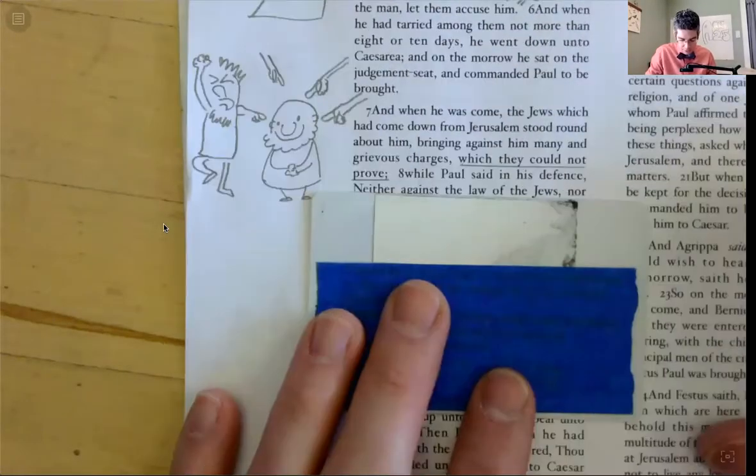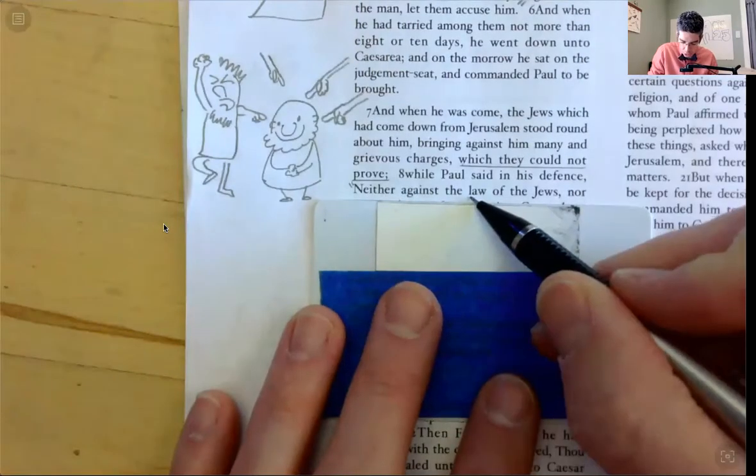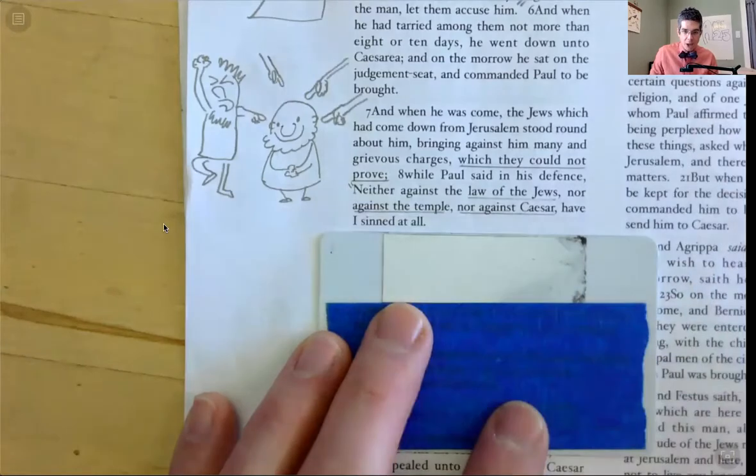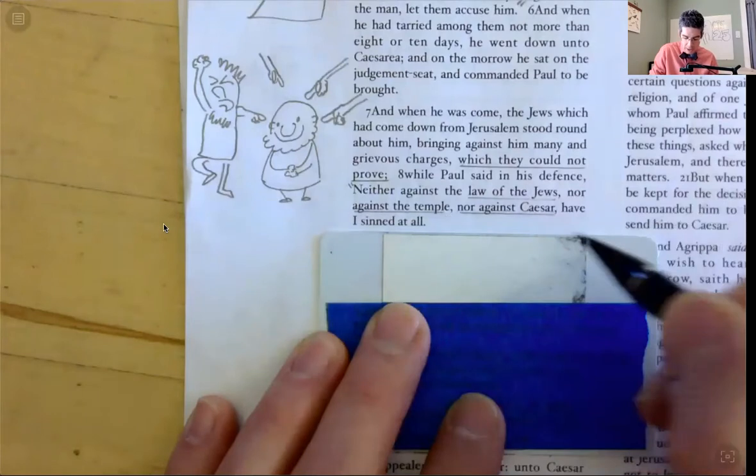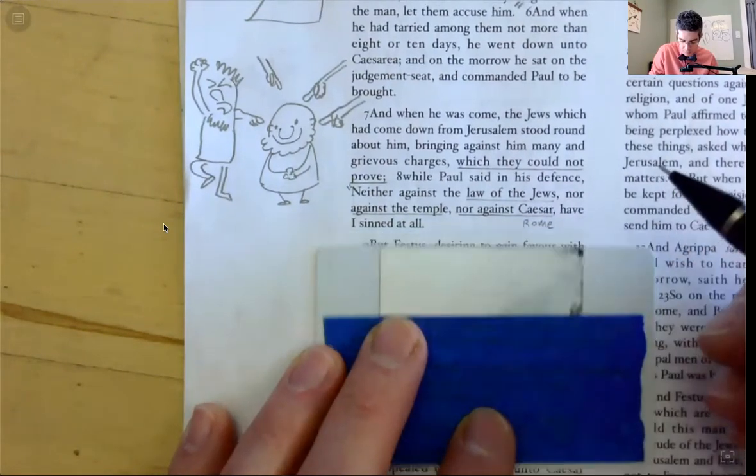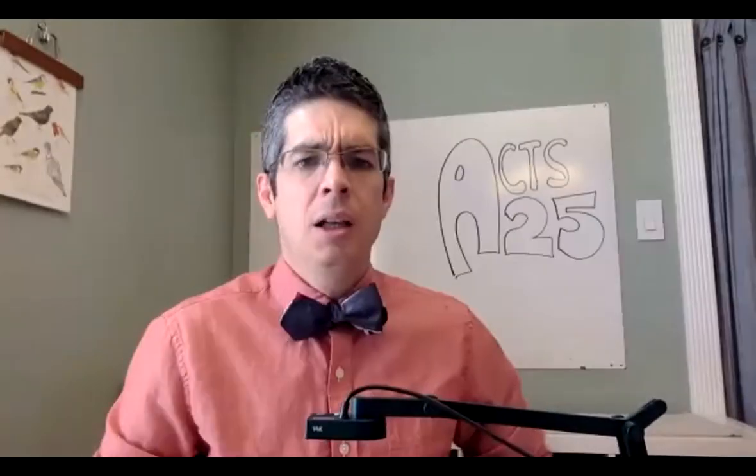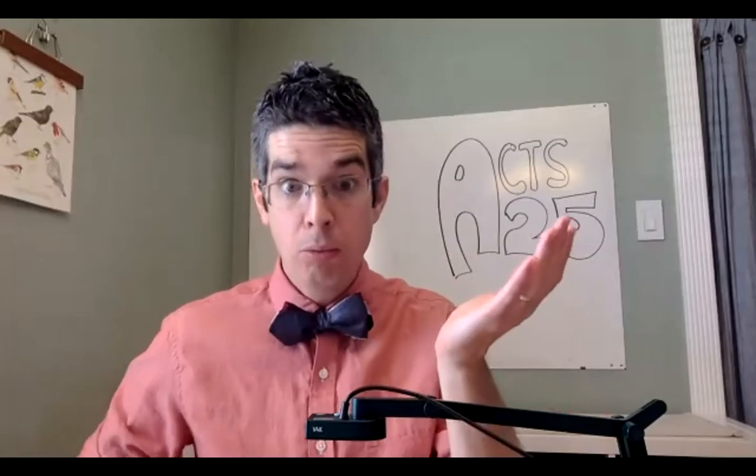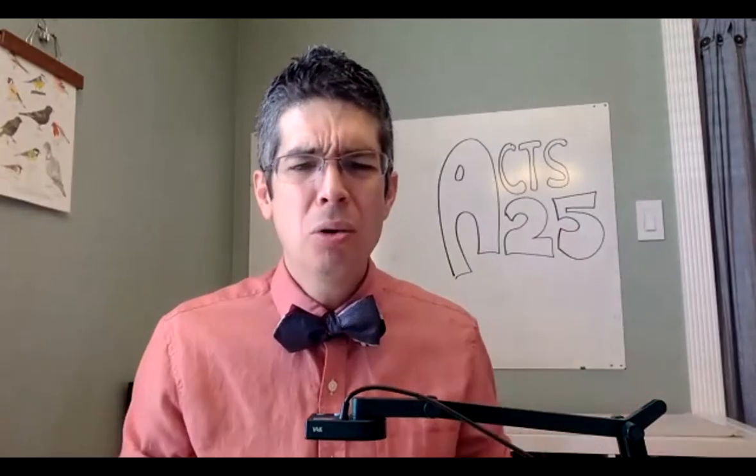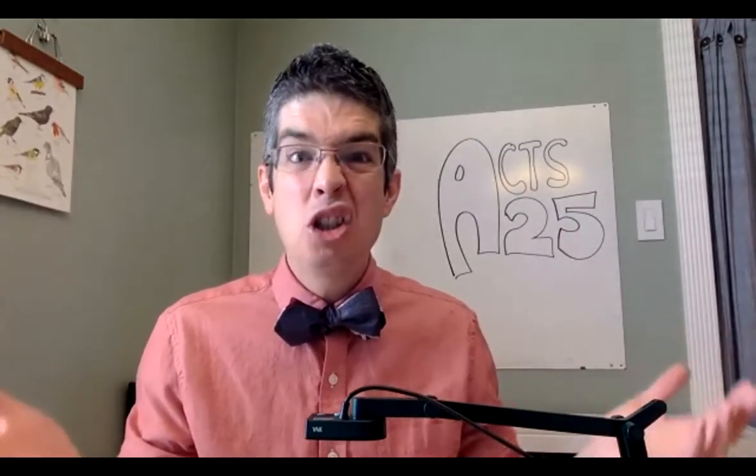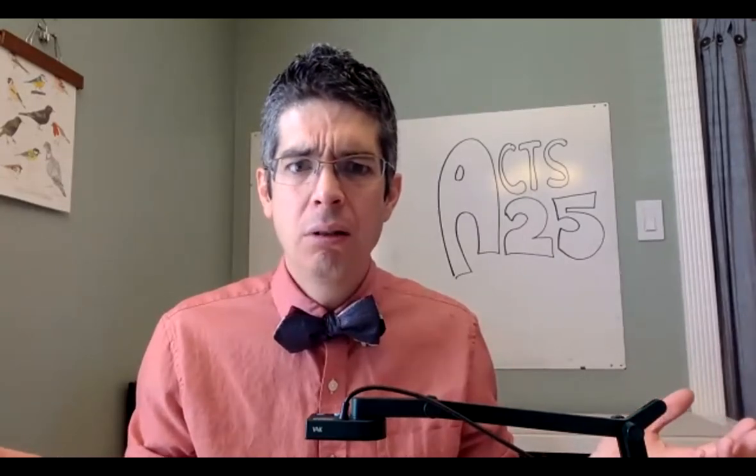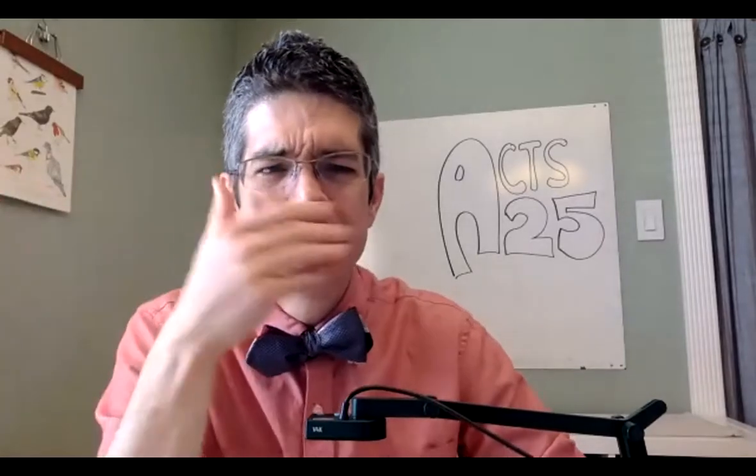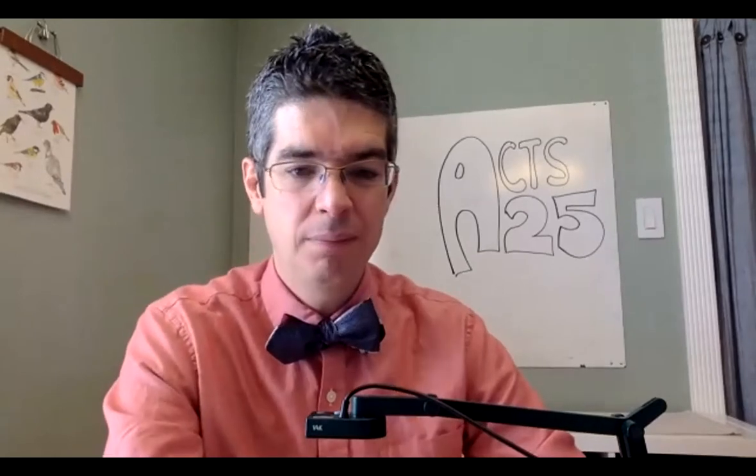While Paul said in his defense, neither against the law of the Jews, nor against the temple, nor against Caesar, have I sinned at all. I'm not breaking Jewish law. I'm not doing anything bad against the temple. And I'm not doing anything against Caesar or Rome. So they're saying he's bad, can't prove it, but I know he's bad. And Paul says, no, I haven't done anything wrong. So what does that mean? He's in jail. Why is he in jail? Do you see the problem here? It doesn't really make sense, does it?